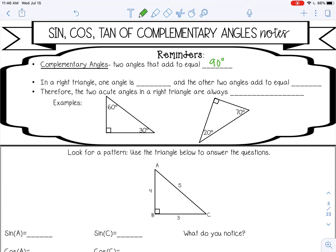In a right triangle, one angle is right, 90 degrees, and the other two angles add to equal 90 degrees. Because we already know the three angles in a triangle add to equal 180, so if one angle is already 90, the other two have to add to 90 because 90 plus 90 gives us 180. Therefore, the two acute angles in a right triangle are always complementary because they add to equal 90 degrees.